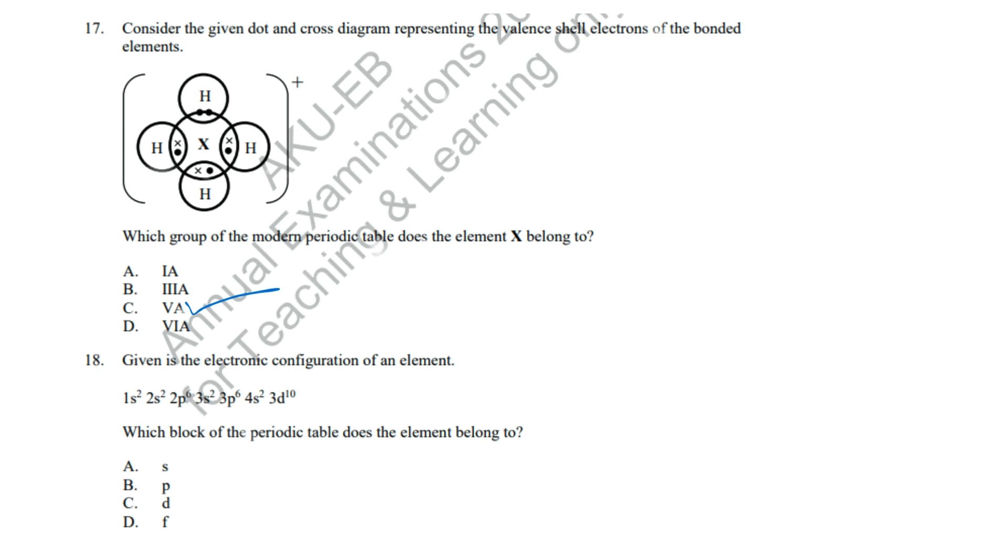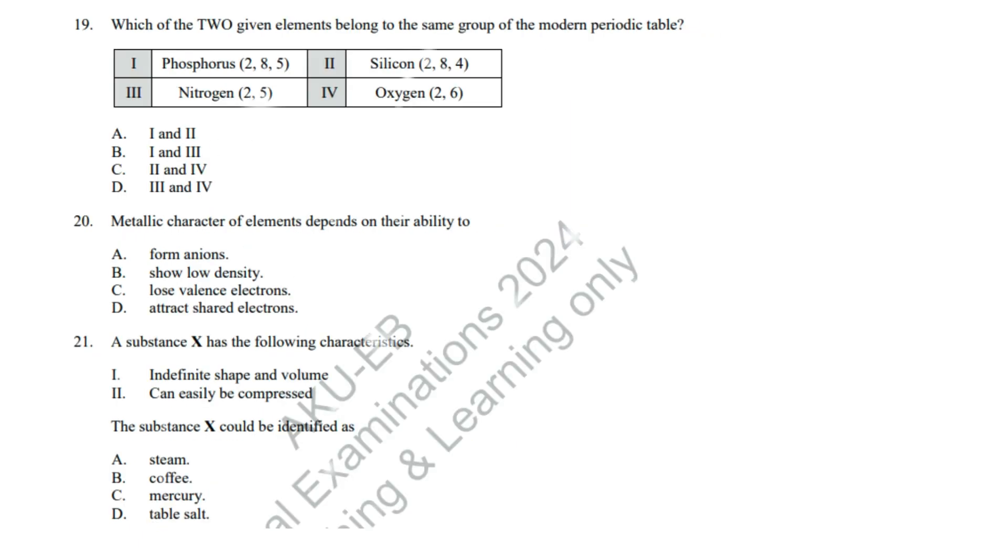Question 18: The presence of 3D electrons places the element in the D block. Correct answer: C, D block. Question 19: Phosphorus (2, 8, 5) and nitrogen (2, 5) are in the same group, group 15. Correct answer: B, I and 3.